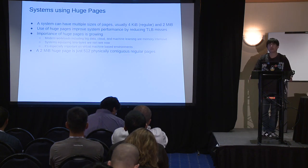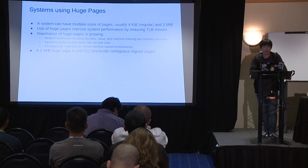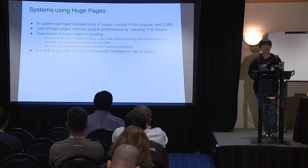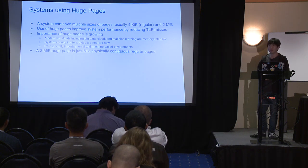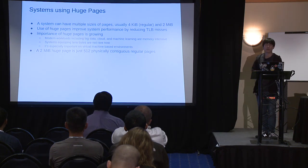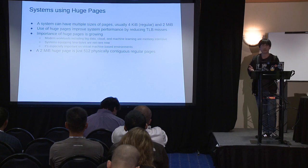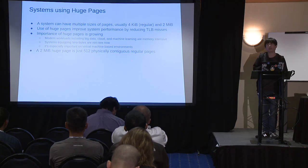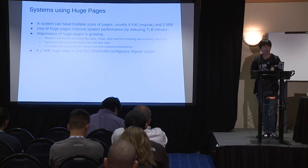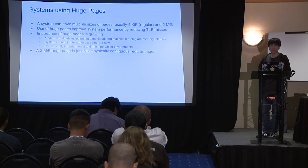There is another case requiring contiguous memory: huge pages. A system can have multiple page sizes — usually 4 kibibytes, called regular pages, and 2 mibibytes, called huge pages. There are also systems using other sizes. For example, x86 can have 1-gigabyte huge pages, called gigantic pages.